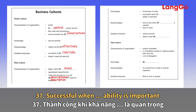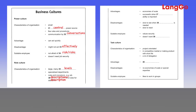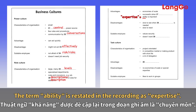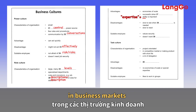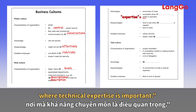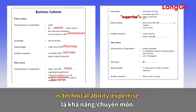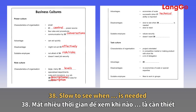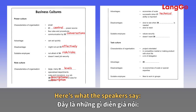Question 37 — successful when ability is important. The speaker says: it is particularly successful in business markets where technical expertise is important. The term 'ability' is restated in the recording as 'expertise', so the ability needed in role culture is technical ability or expertise — hence the answer is 'technical'.